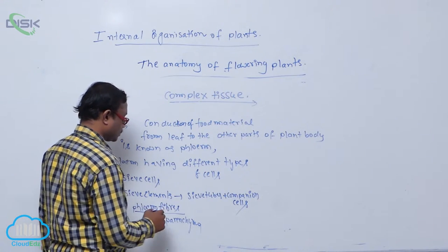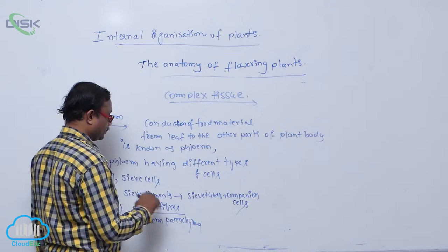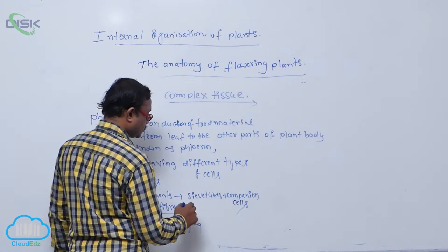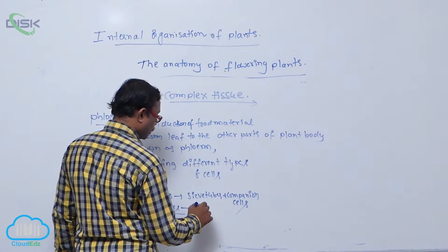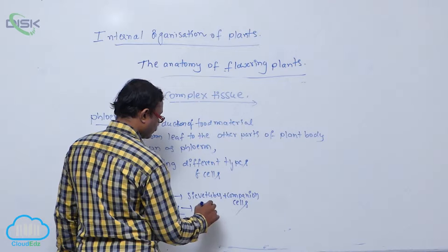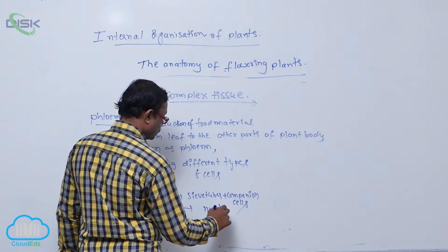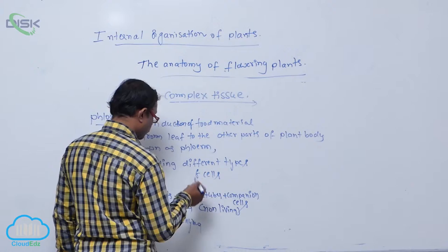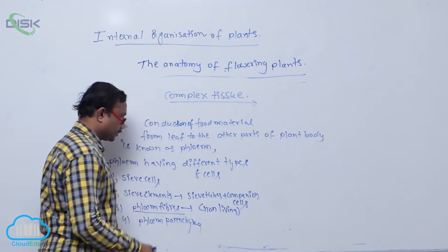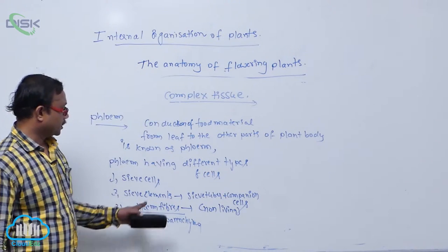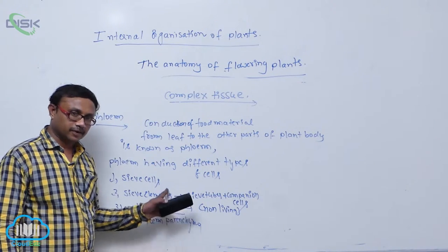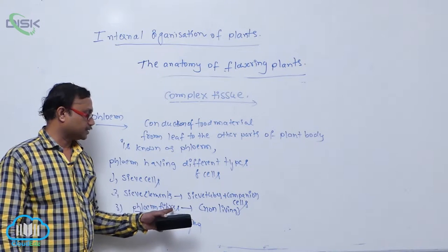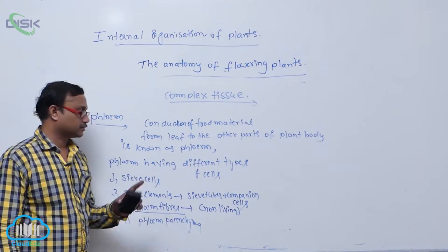Except phloem fibers, all remaining components are living. Phloem fibers are non-living. So in phloem tissue, except phloem fibers, all are present in a living condition.